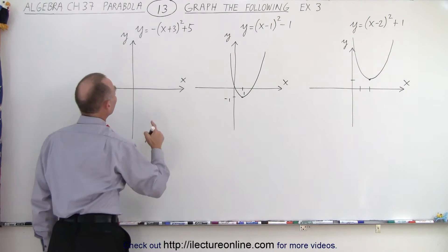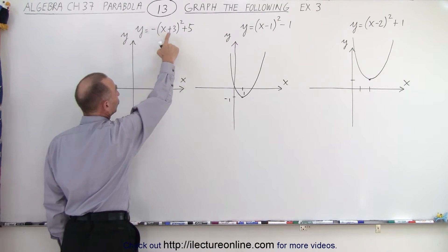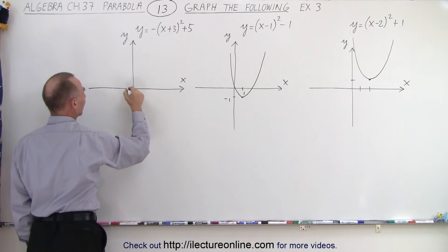And finally, here we can see that the parabola will be opening downward. There's a shift to the left by three and up by five. So left by three, one, two, three, minus three.